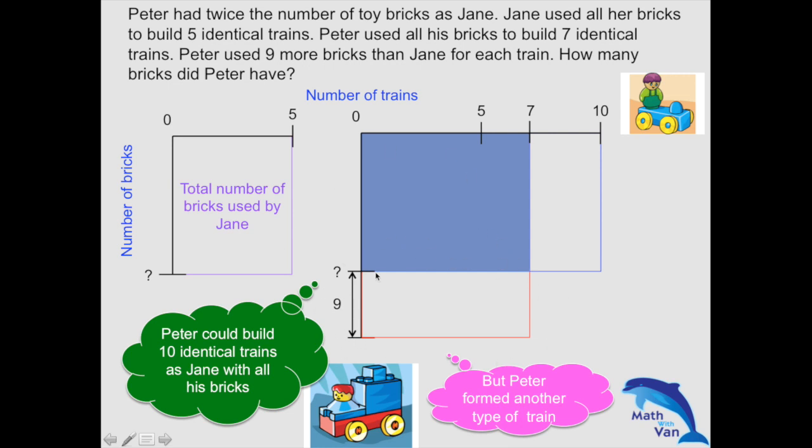So for every 7 trains, he needs 9 additional bricks. So this is 7 times 9, which will be 63 additional bricks.